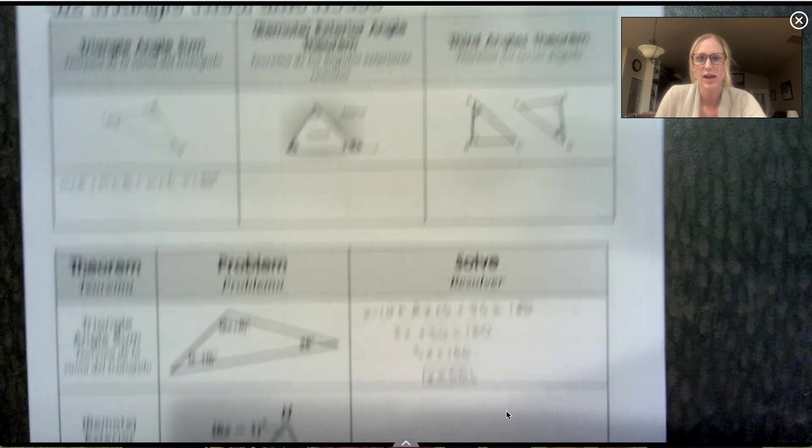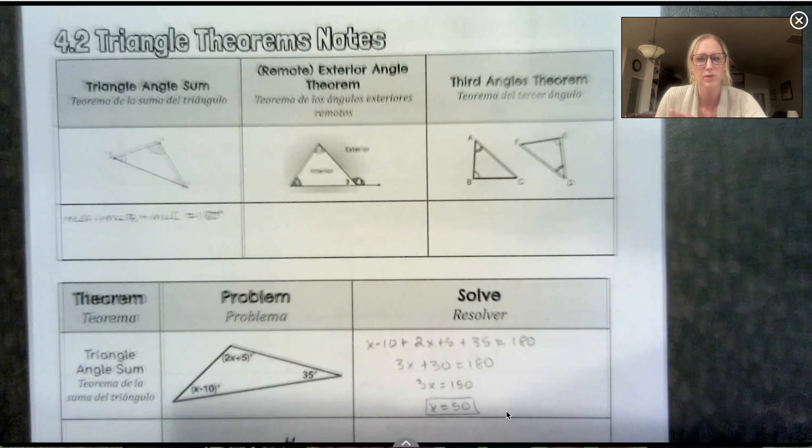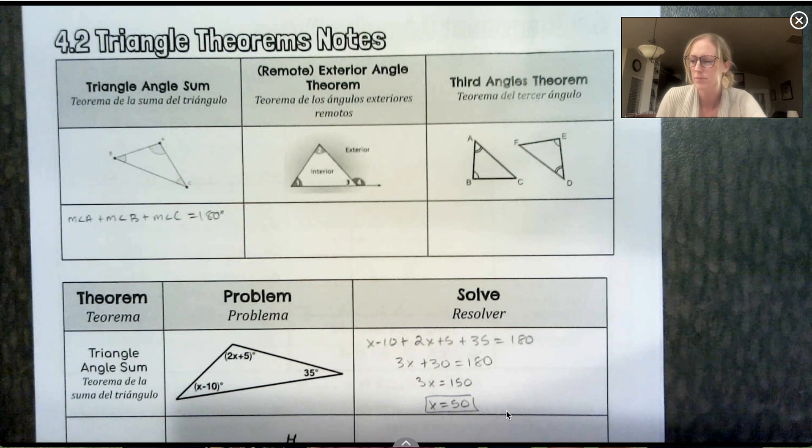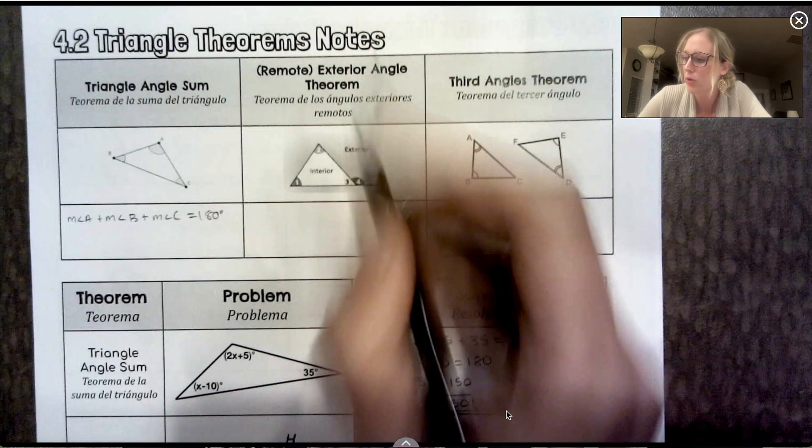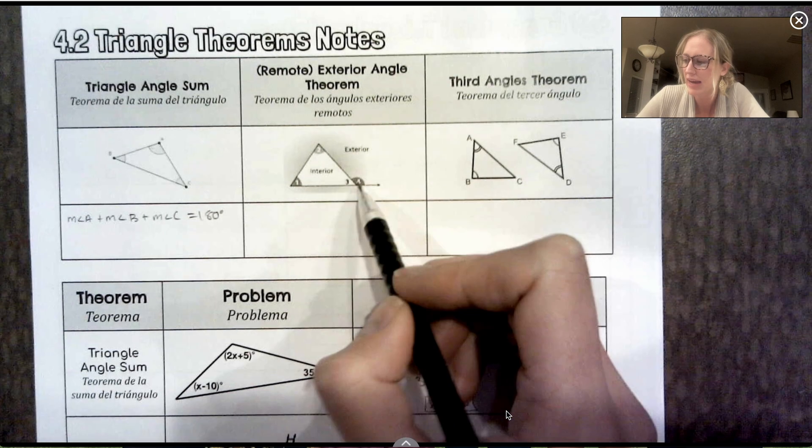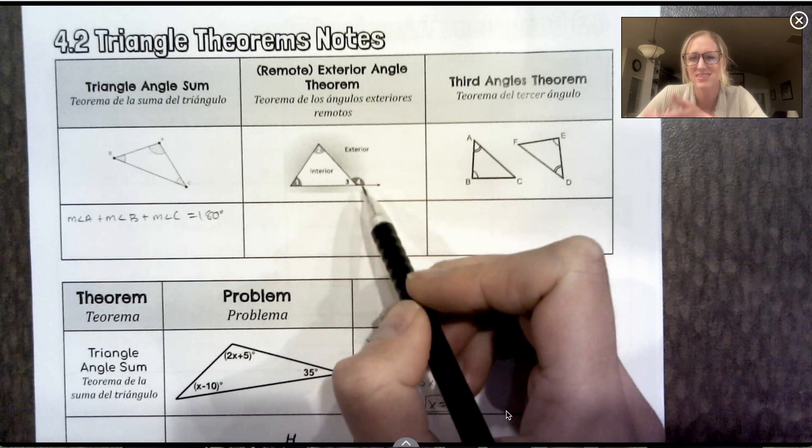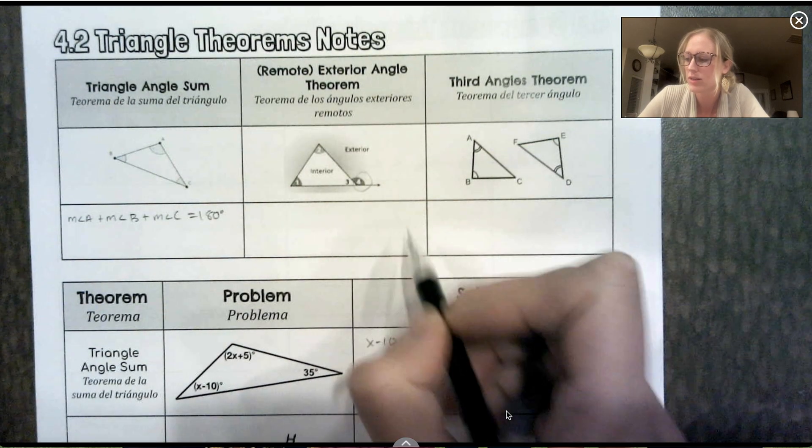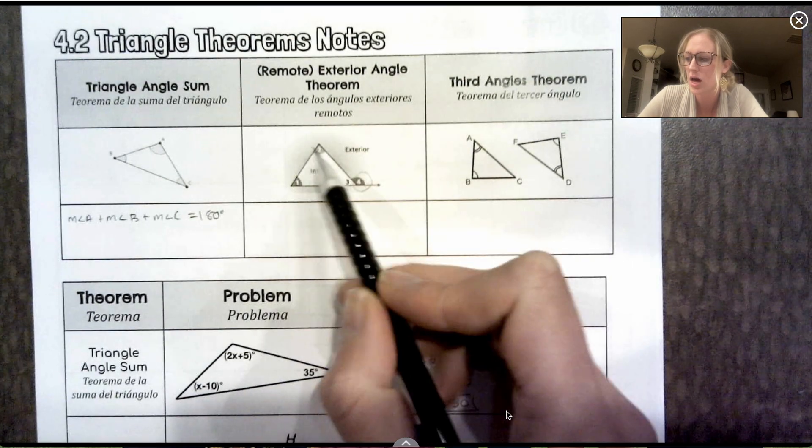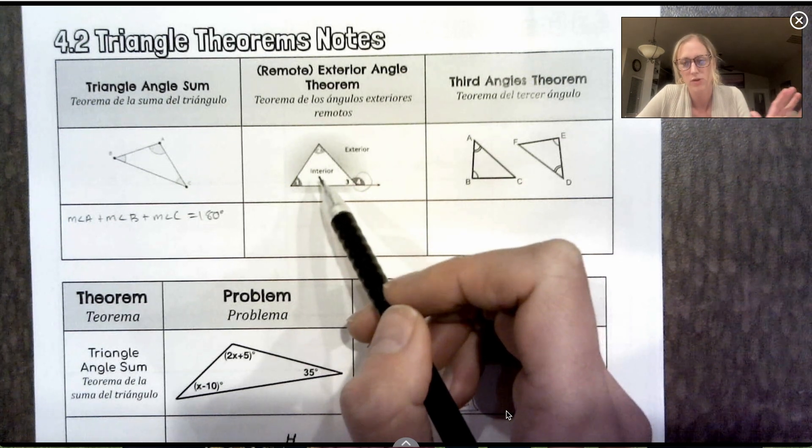Another theorem we have is called the exterior angle theorem. Sometimes it's called the remote exterior angle theorem. Remote means isolated, right? So if I have a triangle and I have an angle that's on the outside, it's kind of isolated from the other angles that are inside the triangle.